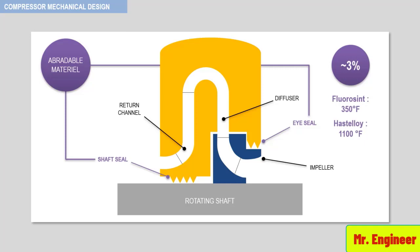Usually, the labyrinth, which looks like knife edges as highlighted here, is positioned on the rotors whenever abradable seals are used. It has proven cost-effective not to attempt to machine knife edges in the abradable material.